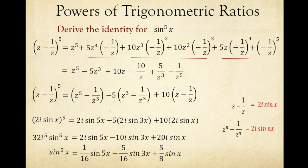The procedure for deriving identities for powers of sine and cosine is basically the same. For cosine, use z plus 1 over z and z to the power of n plus 1 over z to the power of n. For sine, use z minus 1 over z and z to the power of n minus 1 over z to the power of n. That's it for today — thank you very much and see you again next time.